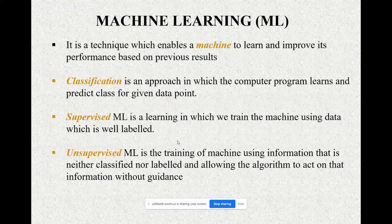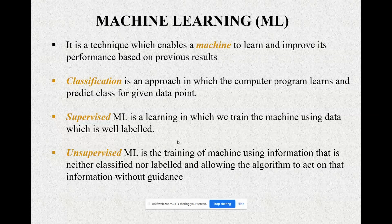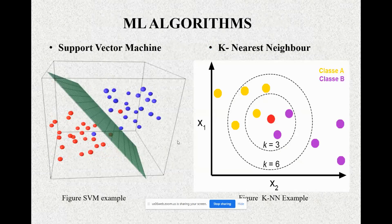I used networks of machine learning. Machine learning is a tool that enables machines to learn and improve performance based on previous results. There are various approaches; one of them is classification, in which the computer program learns and predicts a class for the data point. Machine learning is divided into two parts: supervised machine learning, where we train the machine using well-labeled data, and unsupervised machine learning, where training uses information that is neither classified nor labeled, allowing the algorithm to act on that information without guidance.